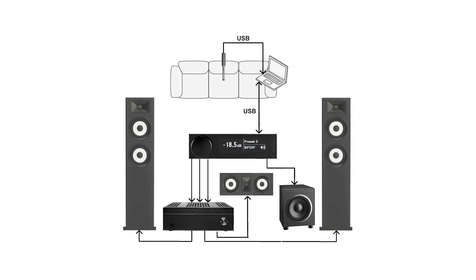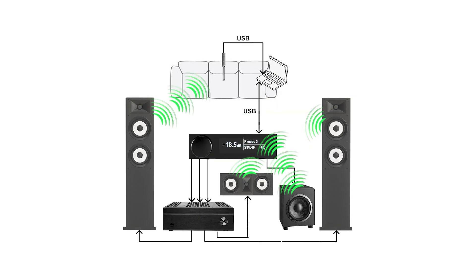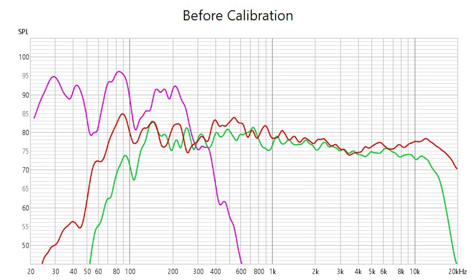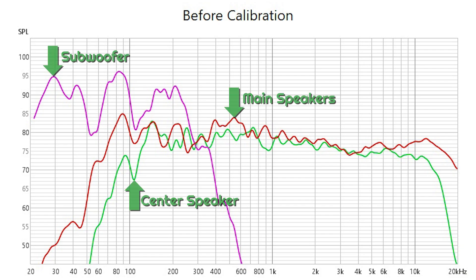First, you'll measure the output levels and delays with REW. Next, you'll adjust the gain and delay settings for each output — front left, front right, center, and subwoofer — to achieve proper balance and time alignment in your room. Using test tones, you'll confirm your 3.1 setup is correctly configured prior to room correction. Once bass management is set up, the channels should look something like this before your DIRAC or REW project.